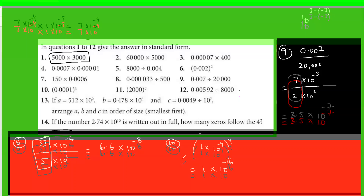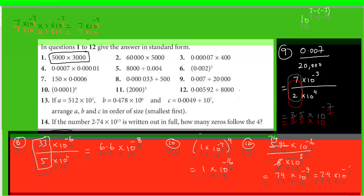For question 12: 0.00592 divided by 8×10³. I'll write it as 592×10⁻⁶ divided by 8×10³, so I can cancel 592 with 8 easily. 8 times 74 is 592, giving 74×10⁻⁹, which in standard form is 7.4×10⁻⁸.